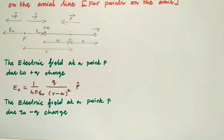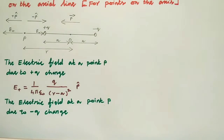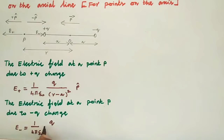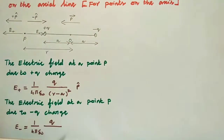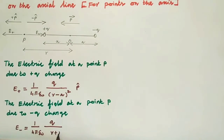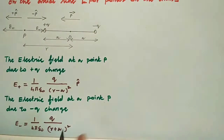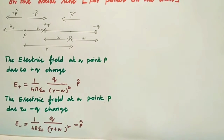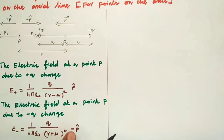The electric field at point P due to the negative charge is written as E-minus equal to 1 by 4 pi epsilon-naught times Q by (R plus A) whole square. The distance from point P to the negative charge is R plus A. The direction is negative, so we write minus P-cap.